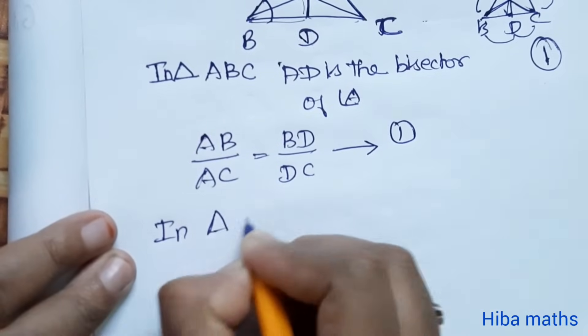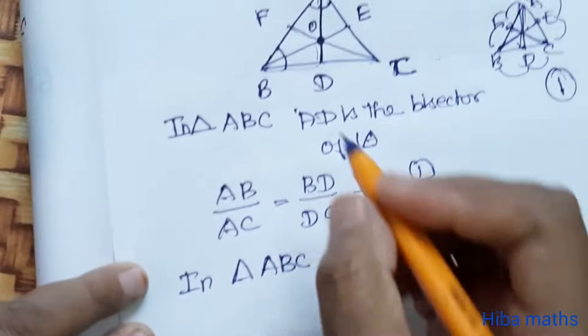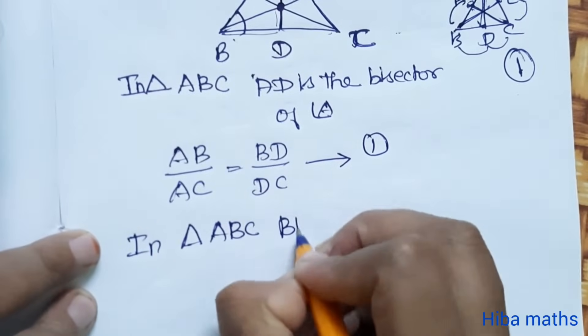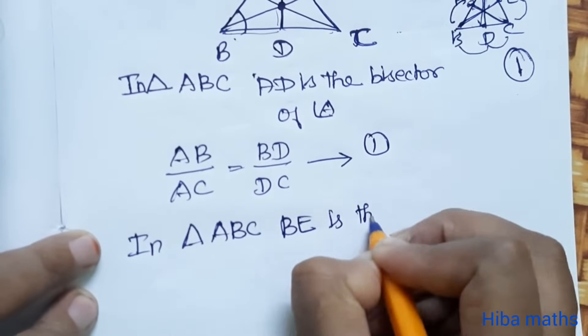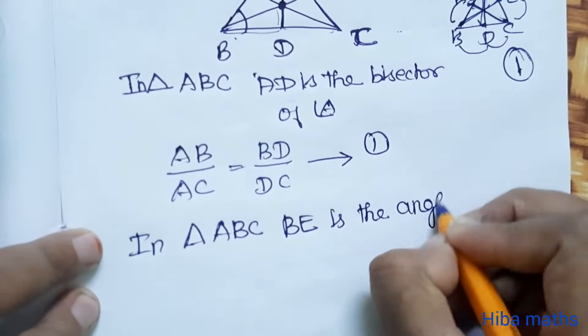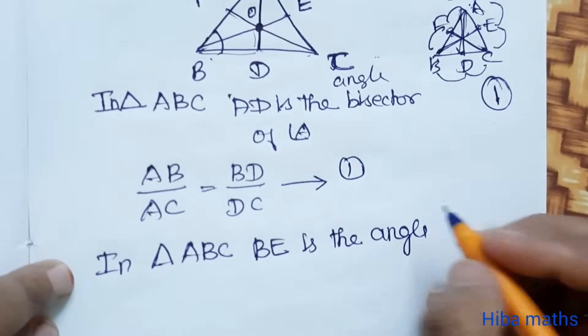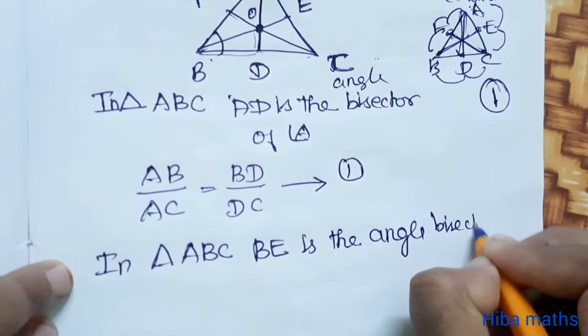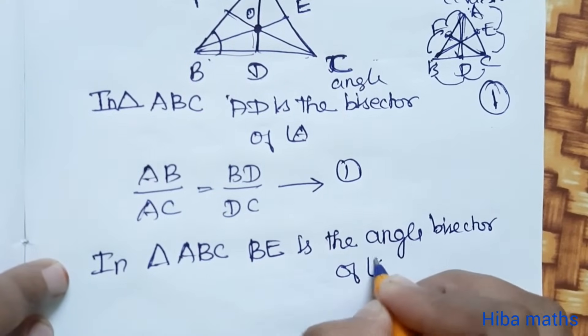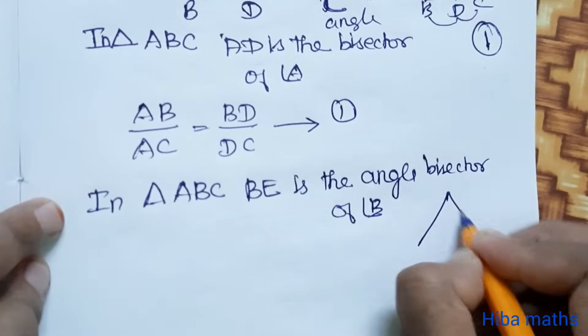Same in triangle ABC. Now angle bisector BE line is the angle bisector of angle B.